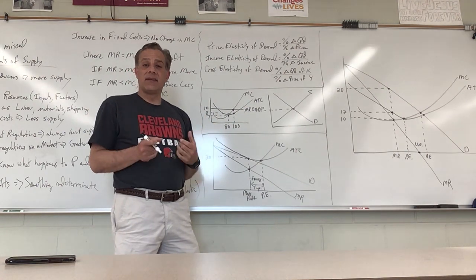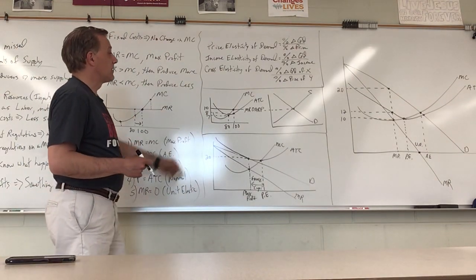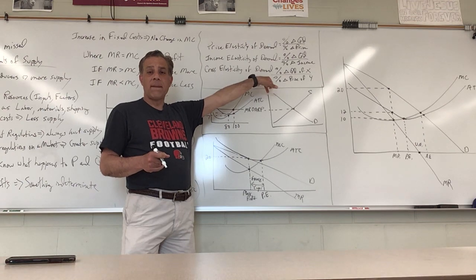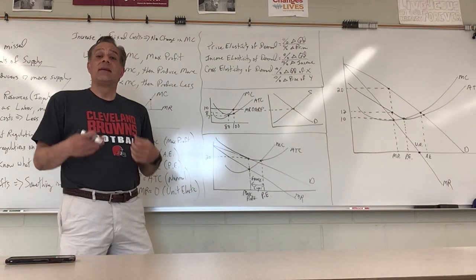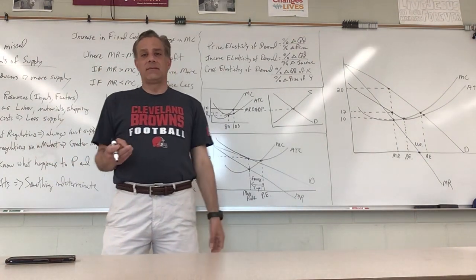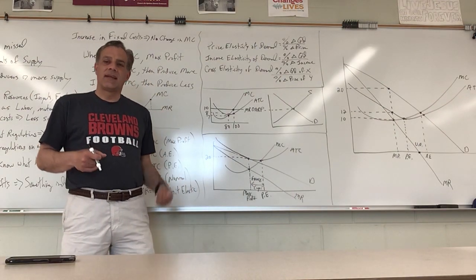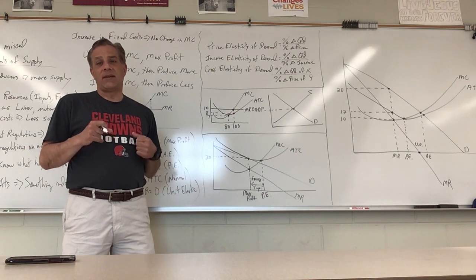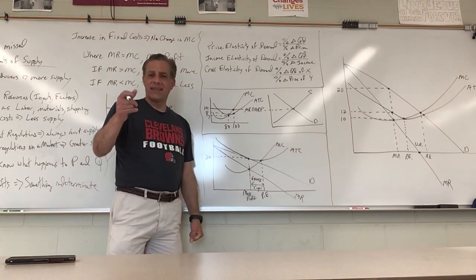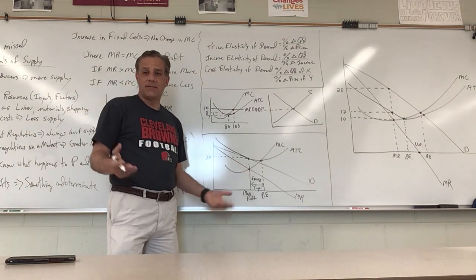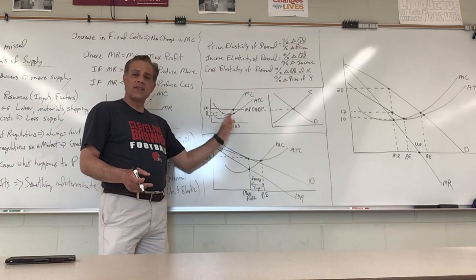Inelastic: no substitutes, inexpensive, necessities, total revenue and price go the same direction. Income elasticity of demand - positive is a normal good, negative is an inferior good like ramen noodles, McDonald's hamburgers, and beer. Cross elasticity of demand tells us if the good is a substitute or a complement. Remember, if you hear your teacher is not here, your initial guilty reaction is cool, I get to listen to music or Olivia Rodrigo.